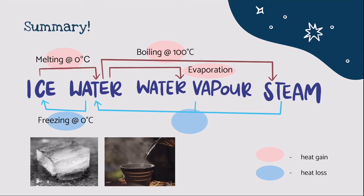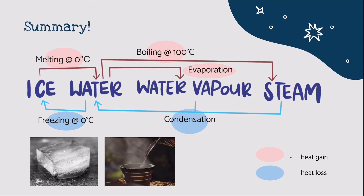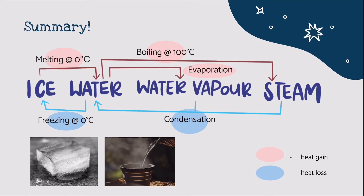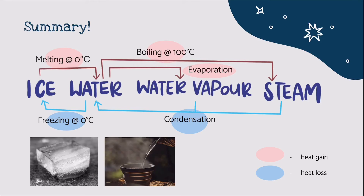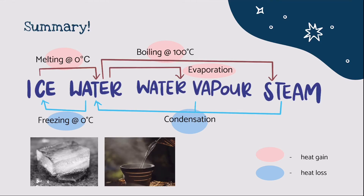To note, water vapour condenses into water at temperatures below 100 degrees Celsius. The difference between steam and water vapour is that water vapour can form through evaporation, which occurs at any temperature. On the other hand, steam is only formed when water boils at 100 degrees Celsius. As for condensation, it occurs whenever there is a difference in temperature between the hotter gaseous water vapour or steam and the cooler surface of another object, which can be a solid or gas surface. You will learn more about this in the topic of heat energy.